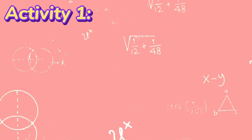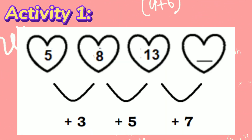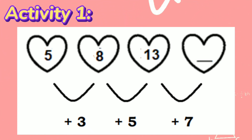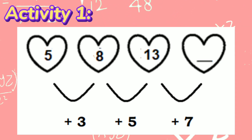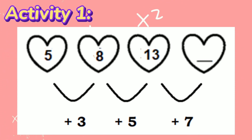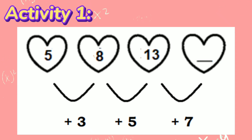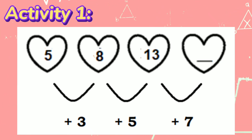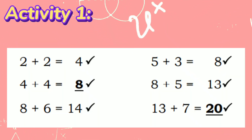Now, let us take a closer look at the numbers in the hearts. The numbers inside the hearts are also in increasing order, so the mathematical operation would be either addition or multiplication as well. In this number sequence, the terms are added by odd numbers — 3, 5, and 7 — consecutively. After figuring out the patterns, let us now proceed to Step 2 and test the pattern.